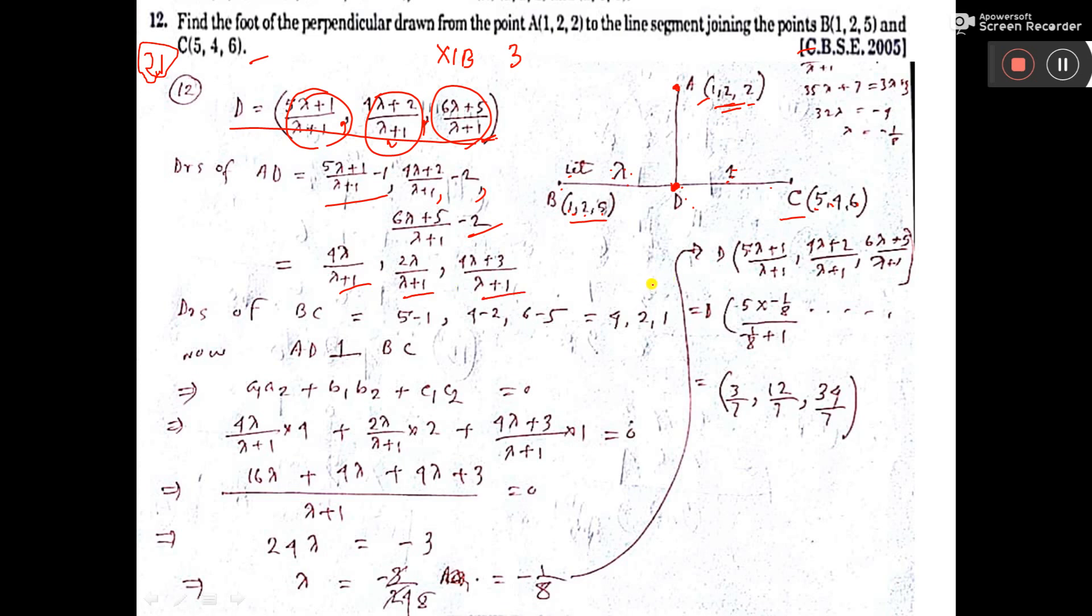Then direction ratio of BC. See BC, 5 minus 1 here, 4 minus 2 here, 6 minus 5 here. That is after calculating we are getting 4 to 1. So direction ratio of AD got here and direction ratio of BC got here.